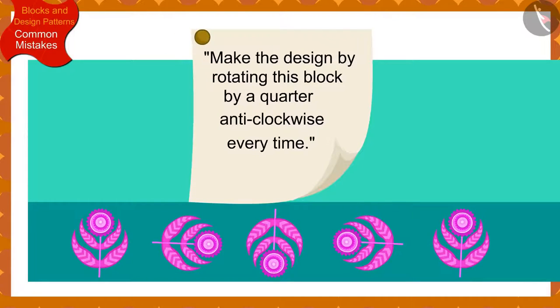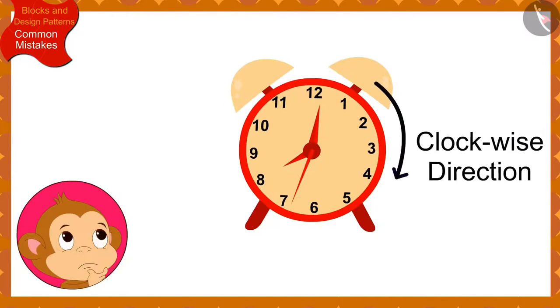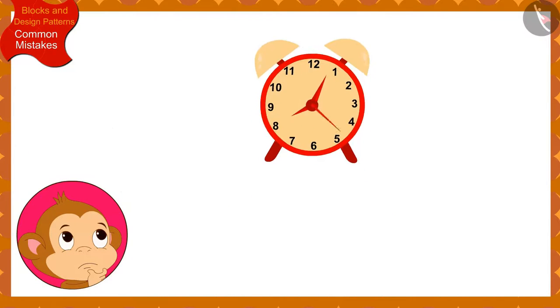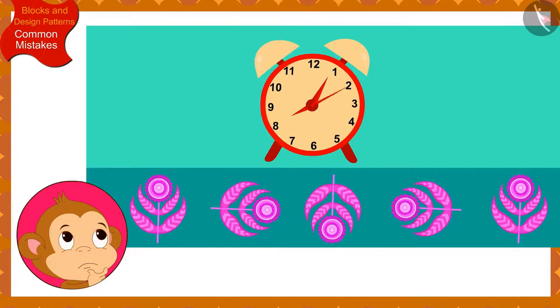Actually, as per the instructions written by Banno, Babban had to rotate the block by a quarter in the anti-clockwise direction every time. But, Babban got confused between the clockwise and anti-clockwise directions and accidentally made the pattern on the saree by rotating the block by a quarter in the clockwise direction every time.